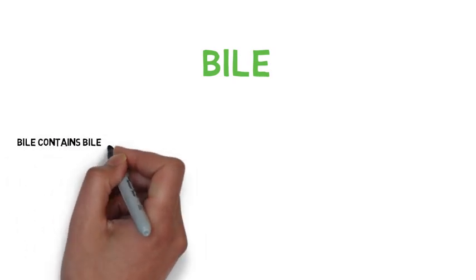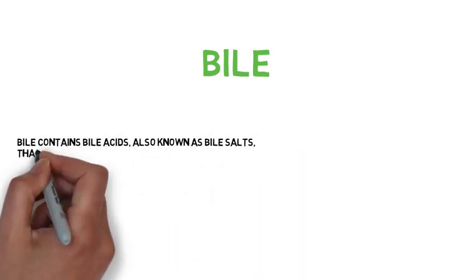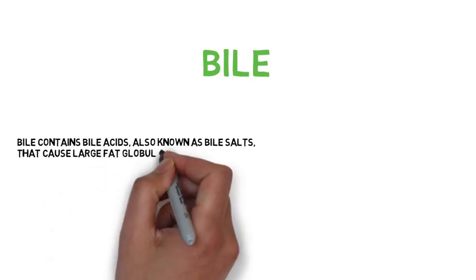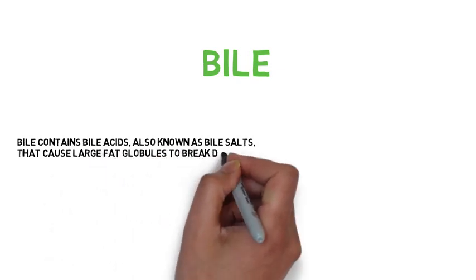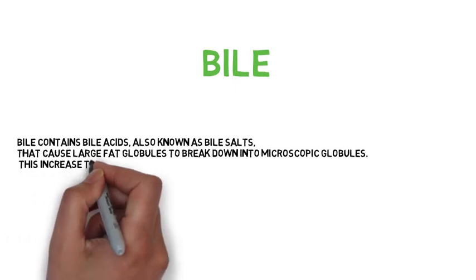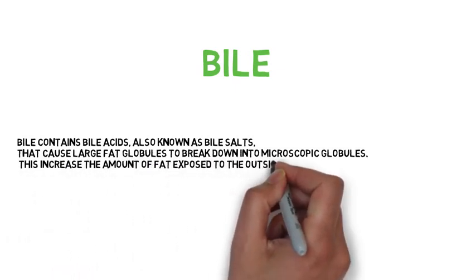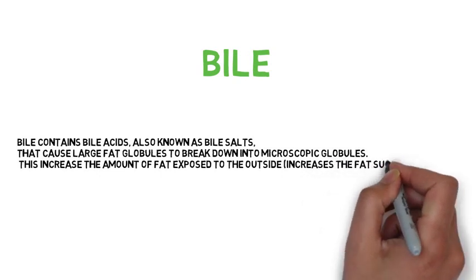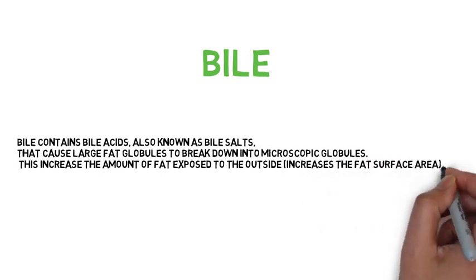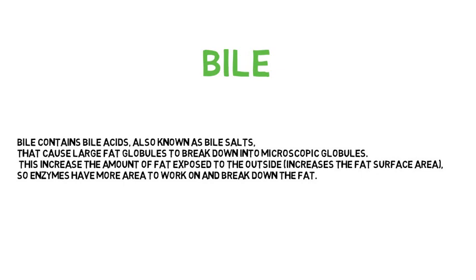Bile contains bile acids, also known as bile salts, that cause large fat globules to break down into microscopic globules. This increases the amount of fat exposed to the outside, which increases the fat surface area, so enzymes have more area to work on and break down the fat.